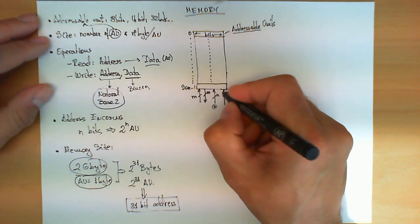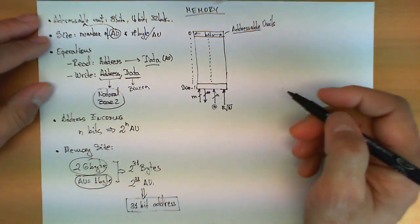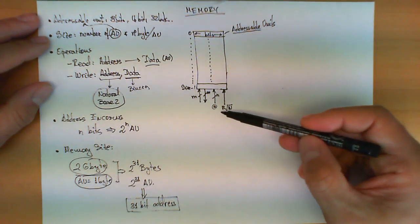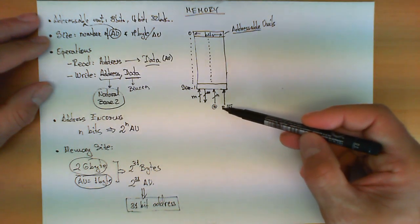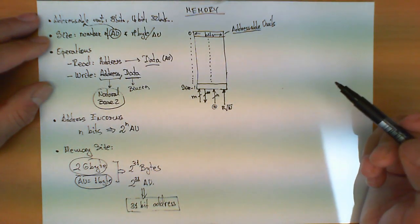And finally, we have one additional control signal, which is the one telling the chip, or telling this circuit, if we're doing a reading or a writing operation. Typically, represented like this, meaning that the read operation is represented by a one, and the write operation is represented by a zero.